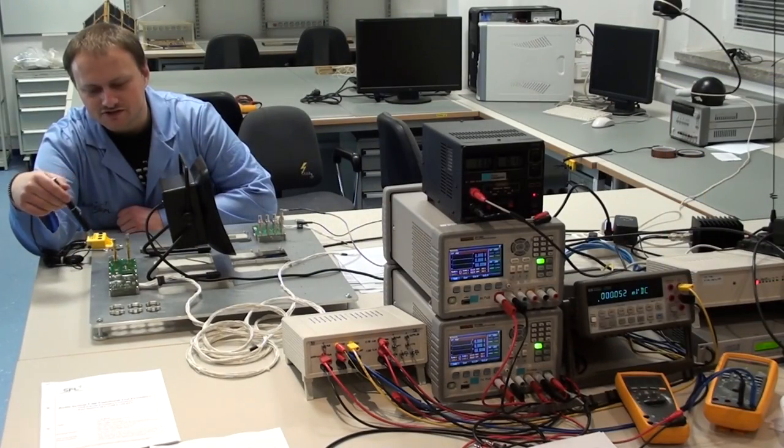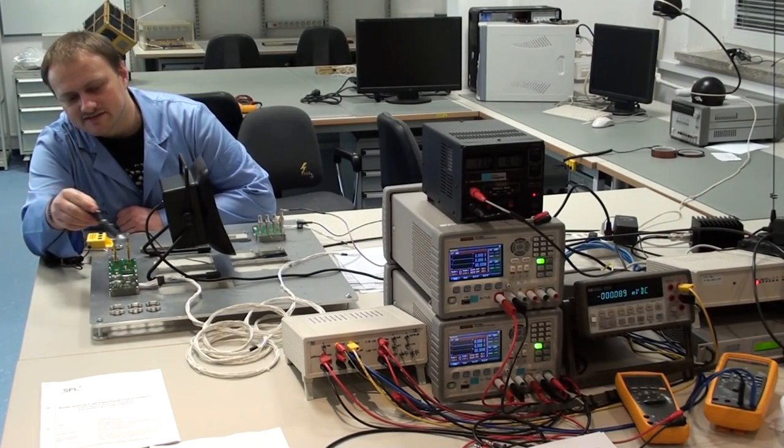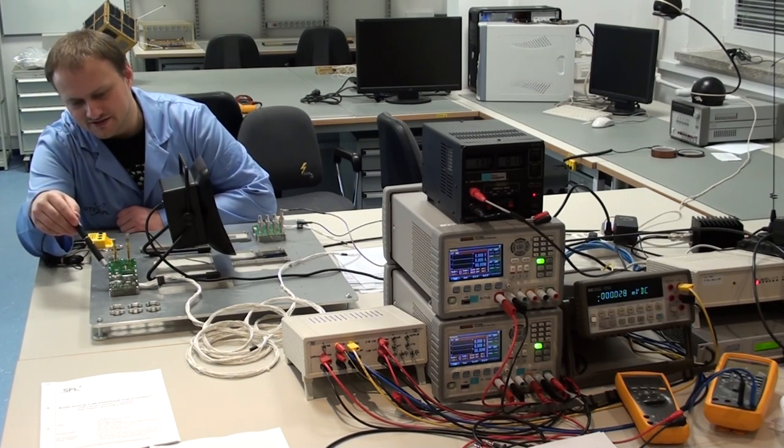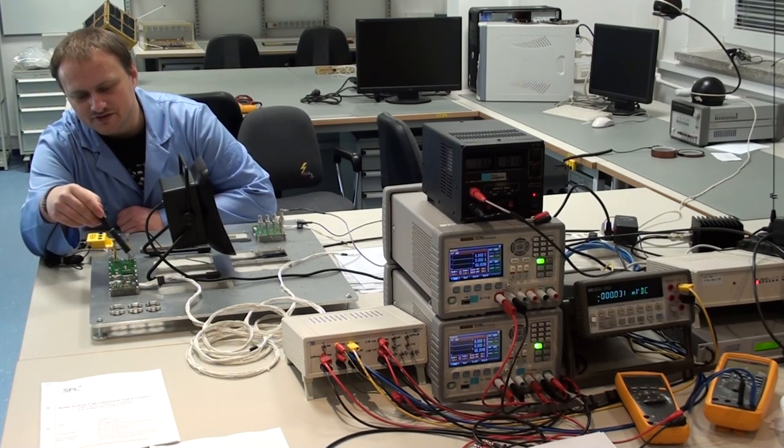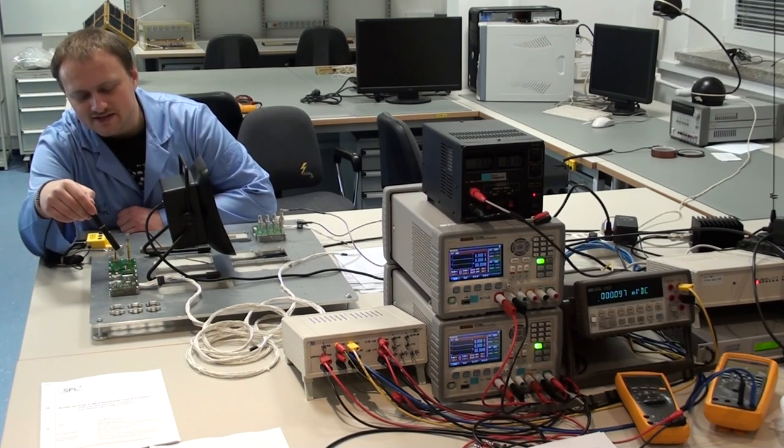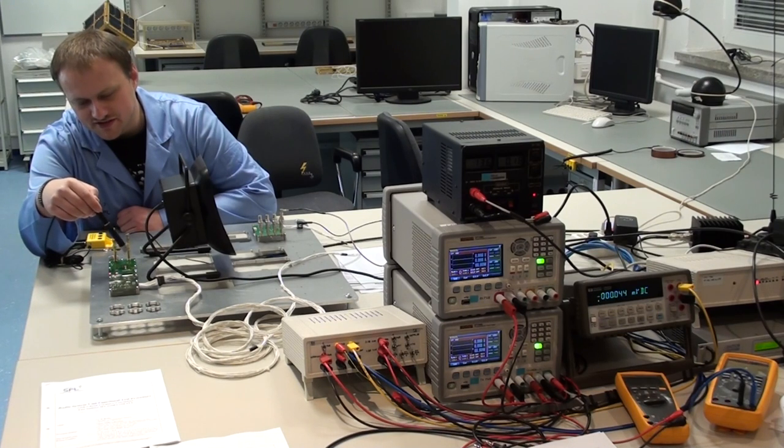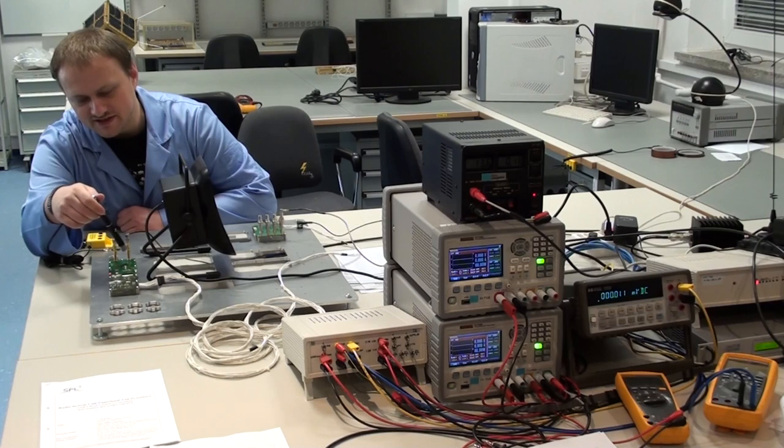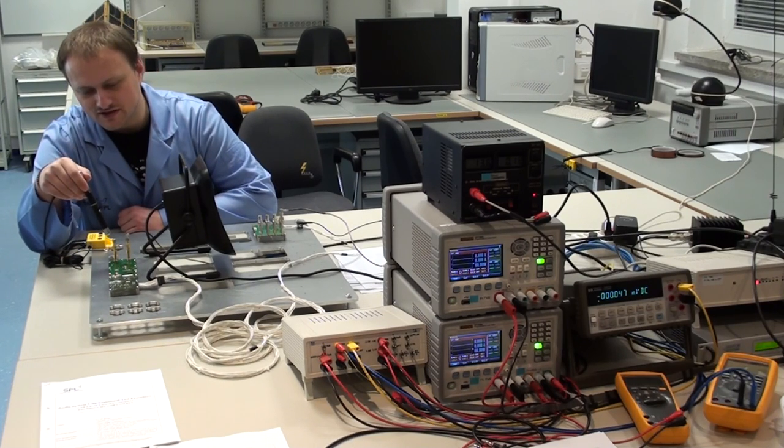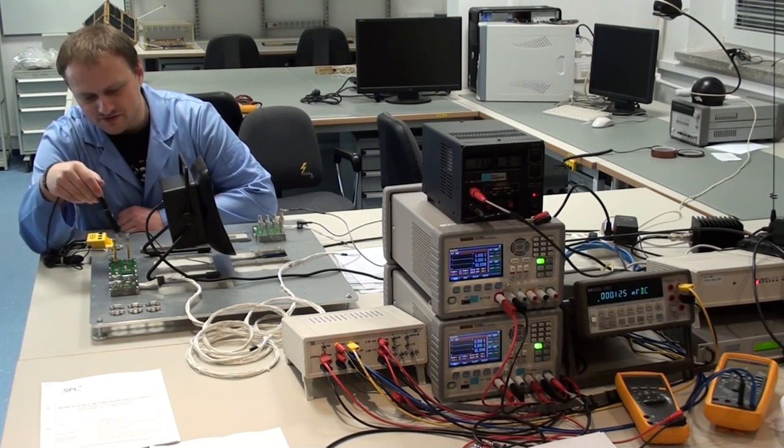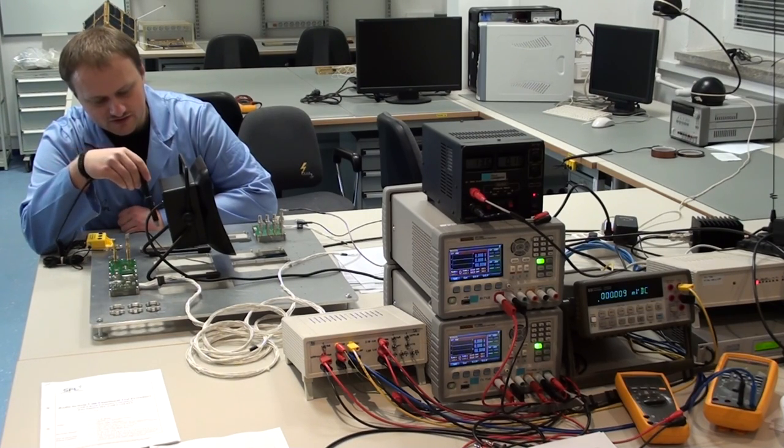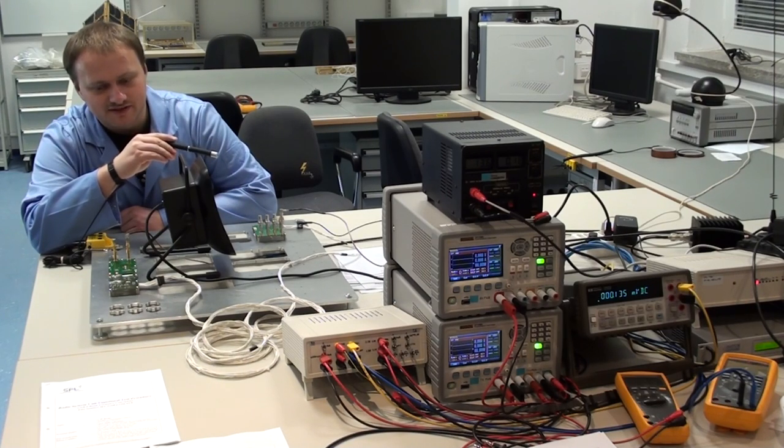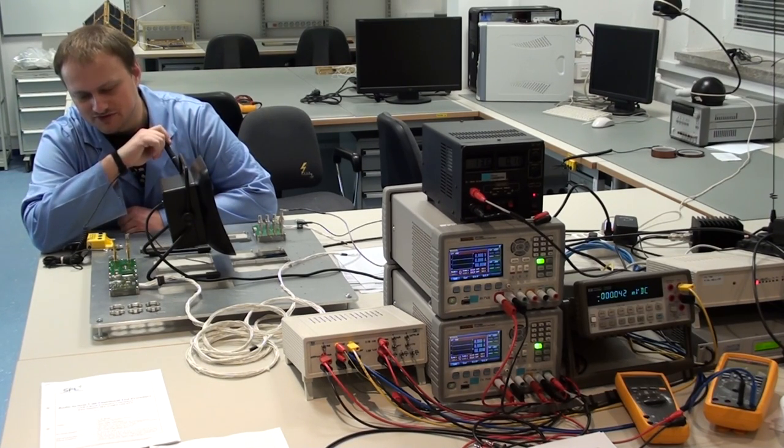W tym miejscu widać moduł nadajnika. Dane z testboxa trafiają na pierwszą płytkę, gdzie następuje scrambling tych danych. Następnie trafiają na drugą płytkę, gdzie następuje modulacja, wzmocnienie mocy i podział mocy na dwie anteny. Jedna w tym przypadku jest zakończona sztucznym obciążeniem, natomiast druga trafia tutaj przez kabel i szereg tłumików do stacji naziemnej w celu demodulacji i testowania tego połączenia.